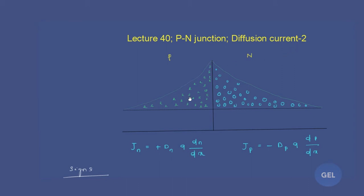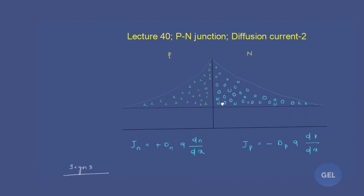Now we join those two semiconductors — P-type and N-type. In P-type, we have minority carrier injection where the minority carrier is electrons, and in N-type the minority carrier injected will be holes. Now that we have joined P and N type together, let's analyze the direction of hole current and electron current through their formulas and sign conventions from our previous lecture.